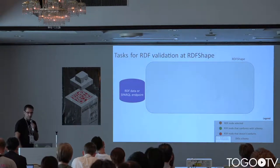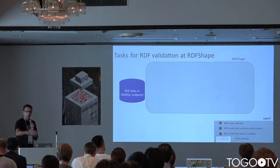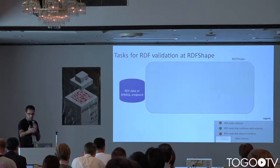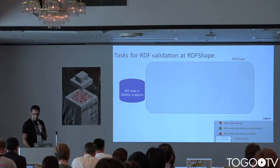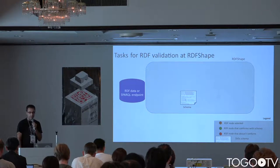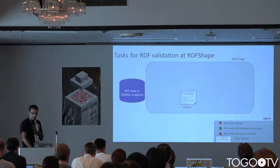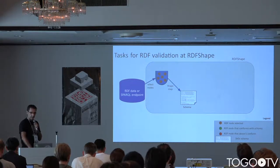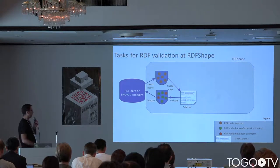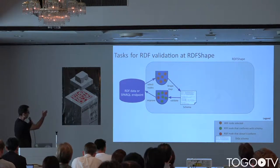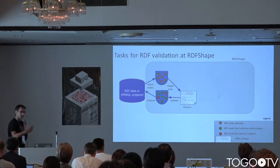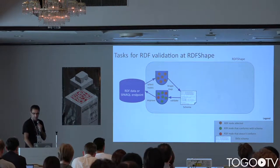The common task you usually do with RDF Shape for validation is: you have a SPARQL endpoint, you can define ShEx expressions or a SHACL schema, select some nodes, and then validate. The green nodes are the valid ones and the red ones are the invalid ones.